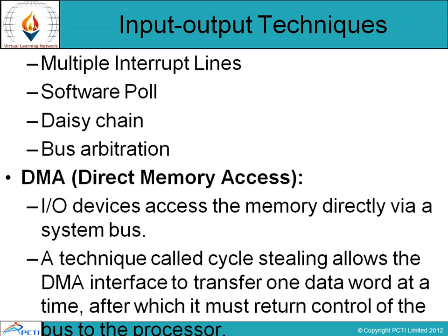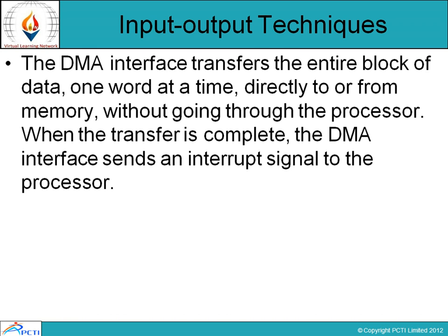The third technique is Direct Memory Access (DMA), where input-output devices access memory directly through the system bus. A technique called cycle stealing allows the DMA interface to transfer one data word at a time, after which it must return control of the bus to the processor. The DMA interface transfers the entire block of data, one word at a time, directly to or from memory without going through the processor. When the transfer is complete, the DMA interface sends an interrupt signal to the processor.